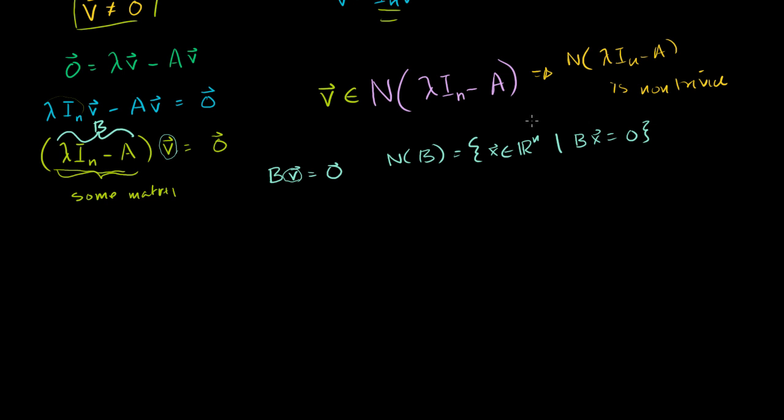So this means that the null space of lambda I_n minus A is non-trivial. The 0 vector is not the only member. And you might remember that if I have some matrix D, D's columns are linearly independent if and only if the null space of D only contains the 0 vector. So if we have some matrix here whose null space does not only contain the 0 vector, then it has linearly dependent columns.